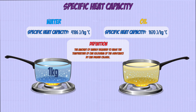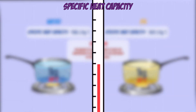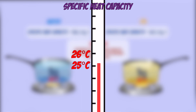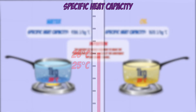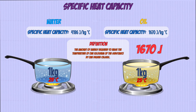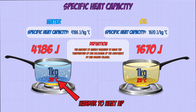So if you had one kilogram of water and one kilogram of oil, both at 25 degrees C, and you wanted to increase their temperature by one degree to 26 degrees C, the oil would only need 1,670 joules of energy, but the water would need 4,186 joules of energy, making it harder to heat up.